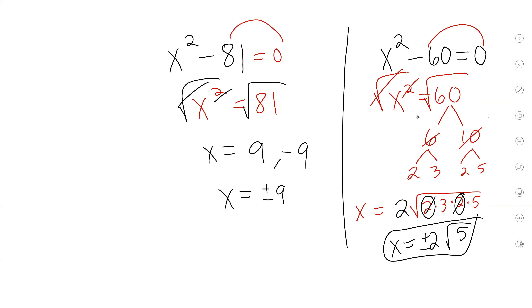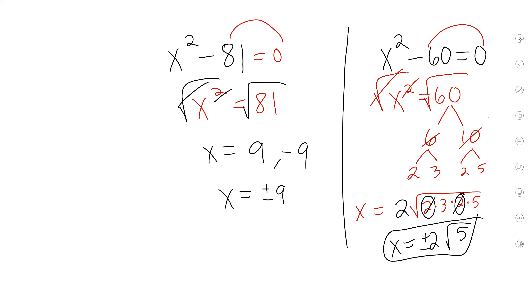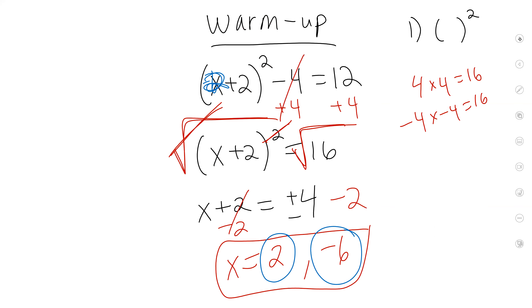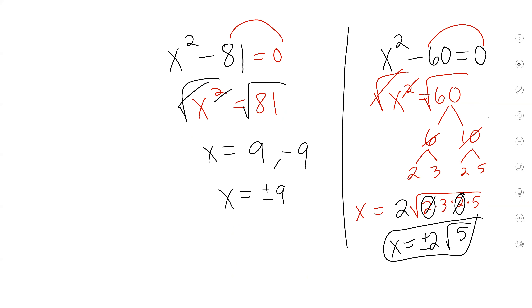You multiply the inside and you multiply the outside. So the inside is 3 and 5, that's 15. You multiply the inside and you multiply the outside.